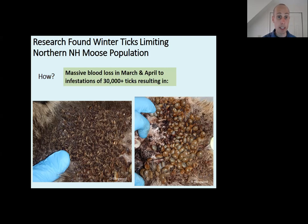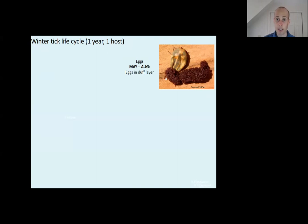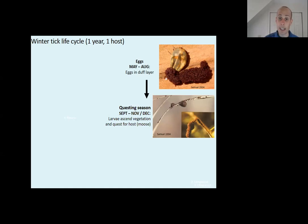Here's the winter tick life cycle. The winter tick is a different species than what you and I typically get. In summer, eggs are in the duff layer from May to August. In late summer those eggs hatch into larvae, and in early September those larvae ascend the vegetation and quest for a host — not specific to moose, they're trying to get on any host. They stay on that vegetation until lasting snow or temperatures below freezing, or they get on a host. The larvae are very small, almost appearing more insect-like, and they don't really like bare skin.